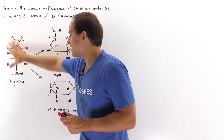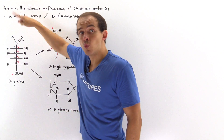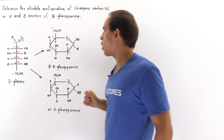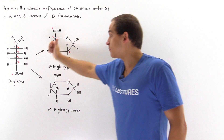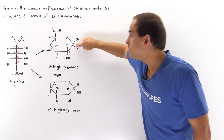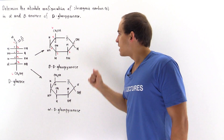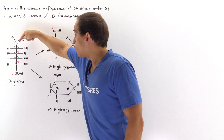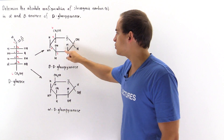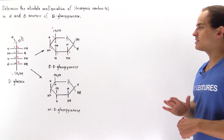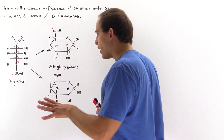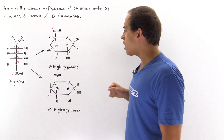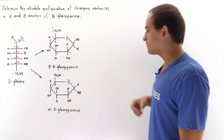In the straight chain case, this carbon of the carbonyl group was not stereogenic because it only had three groups attached. But carbon number one that is formed when we form the alpha and beta anomer does become a stereogenic carbon — it has four different groups. So in the straight chain form we had only four stereogenic carbons, but now we have five stereogenic carbons. The question we want to answer is: what is the absolute configuration of this new stereogenic carbon for the beta anomer as well as the alpha anomer?